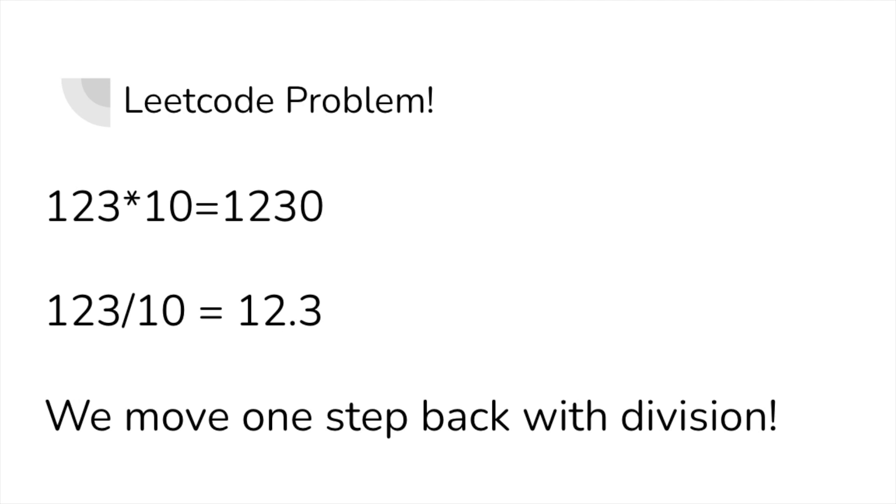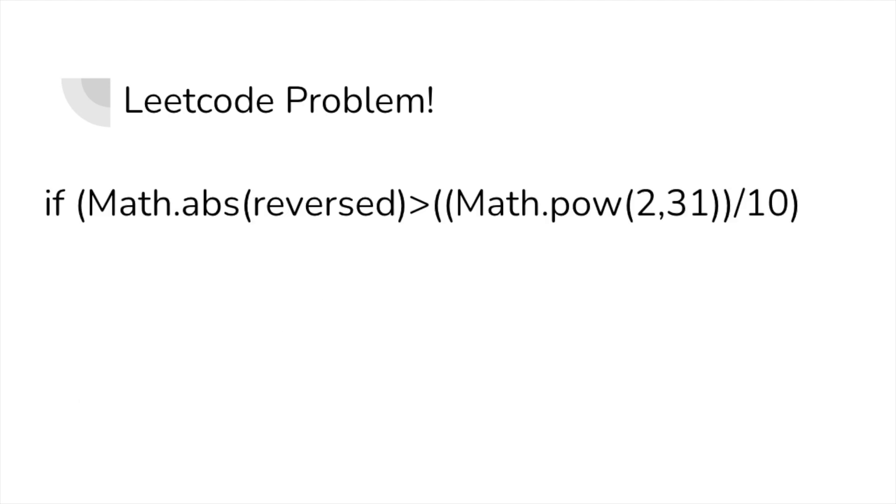Every time we multiply by 10, we increase the size of that number by one digit, so if we divide by 10, we go back a step, so let's do that. We can also take the absolute value of the reversed number, so we do not have to make two different if statements.